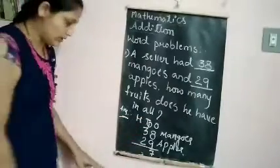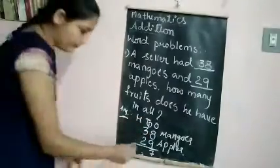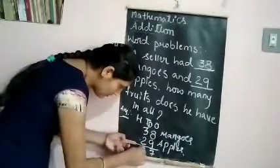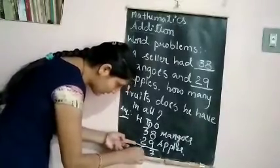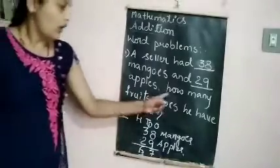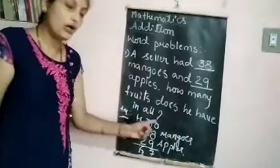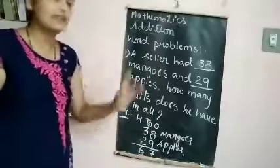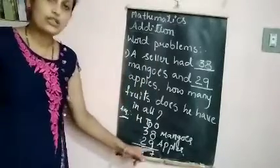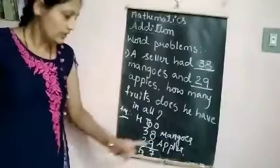Now add the tens column. 1 (carry) plus 3 is 4. 4 plus 2 is 6. Write 6 in the tens column. So the answer is 67. How many fruits does he have in all? He had 67 fruits in all.